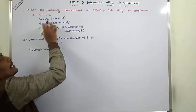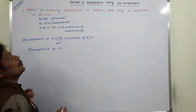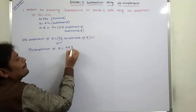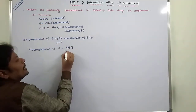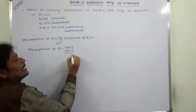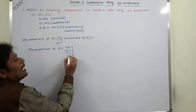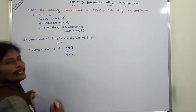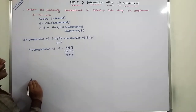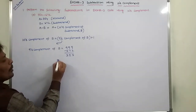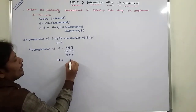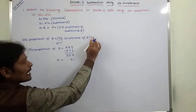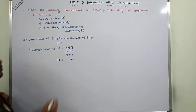The nine's complement of B is obtained by subtracting each digit of subtrahend B from 9. Subtrahend B is 672. So: 9 minus 2 is 7, 9 minus 7 is 2, 9 minus 6 is 3. The nine's complement of B is 327. Then we add plus 1 at the LSB side to get the ten's complement.